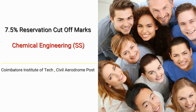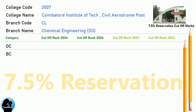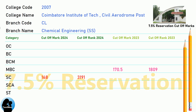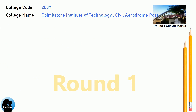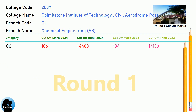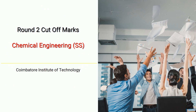DNA 7.5 Reservation Cut-Off for Coimbatore Institute of Technology in Chemical Engineering. DNA Round 1 Cut-Off for Coimbatore Institute of Technology in Chemical Engineering. DNA Round 2 Cut-Off for Coimbatore Institute of Technology in Chemical Engineering.